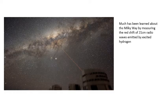Much has been learned about the Milky Way by measuring the red shift of 21 centimeter radio waves which are emitted by excited hydrogen. We know that the Milky Way is a spiral galaxy. We know the structure of the Milky Way because these spiral arms, as the Milky Way rotates, we see red shift and blue shift as they move relative to us. So it's been very useful for determining the structure of the Milky Way.